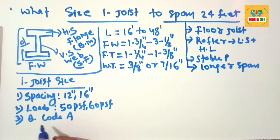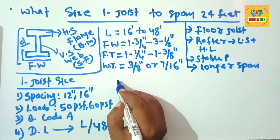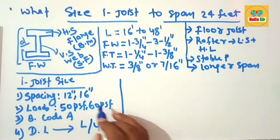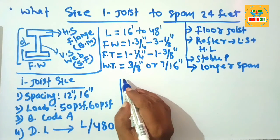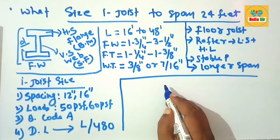The fourth factor is deflection limit, which should be L/480. These are the major factors that decide the I-joist size required for 24-foot span.